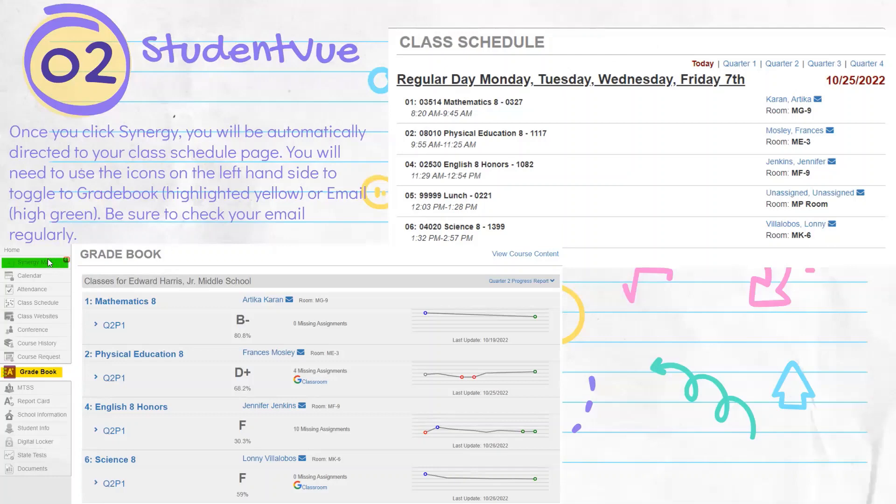On the side of this class schedule, you will see these different icons here. There's a calendar you can use, and it will show you assignments that are coming up at a glance. Class schedule, course history, your report card information, school information.